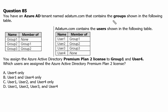Group 1 is an Active Directory group and is a member of nothing, meaning it is not a member of any other group. Group 2 is a member of group 1. Group 3 is a member of group 2.